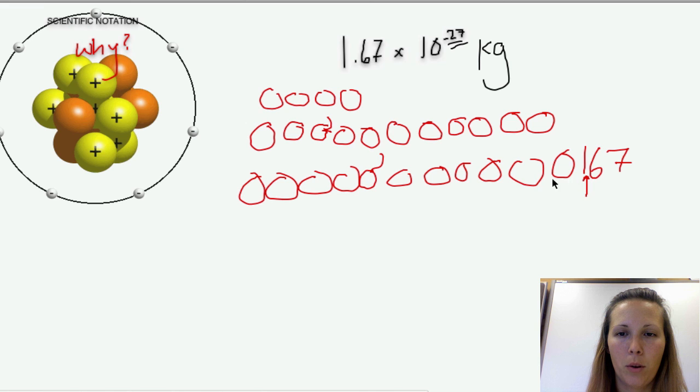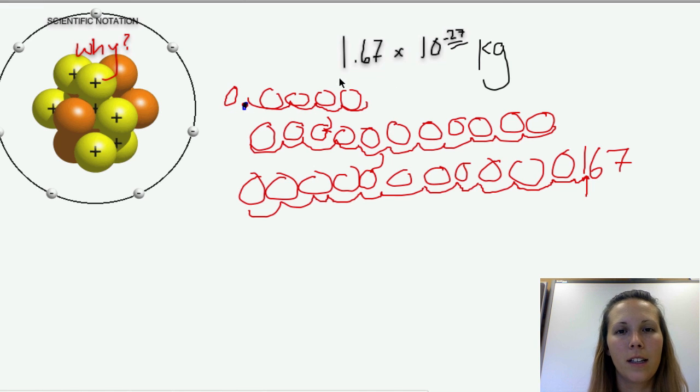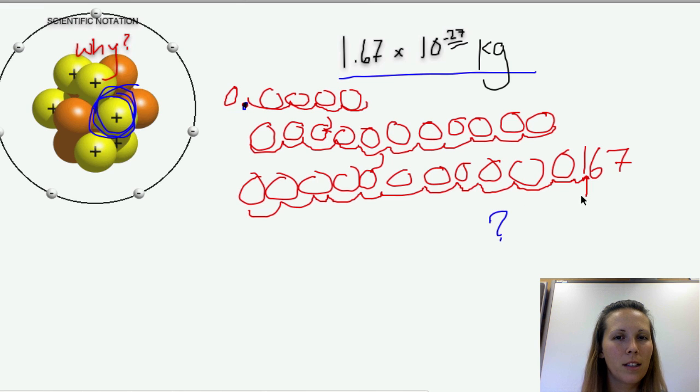So we had our decimal here originally. So now we count how many places. We're going 1, 2, 3, 4, 5, 6, 7, 8, 9, 10, 11, 12, 13, 14, 15, 16, 17, 18, 19, 20, 21, 22, 23, 24, 25, 26, 27. So there, right there is our new decimal. That is the mass of a proton. This dude right here is the mass of a proton taken out of scientific notation. So is it not obvious why we put things in scientific notation? Isn't it a million times easier to put it like this? I think it is.